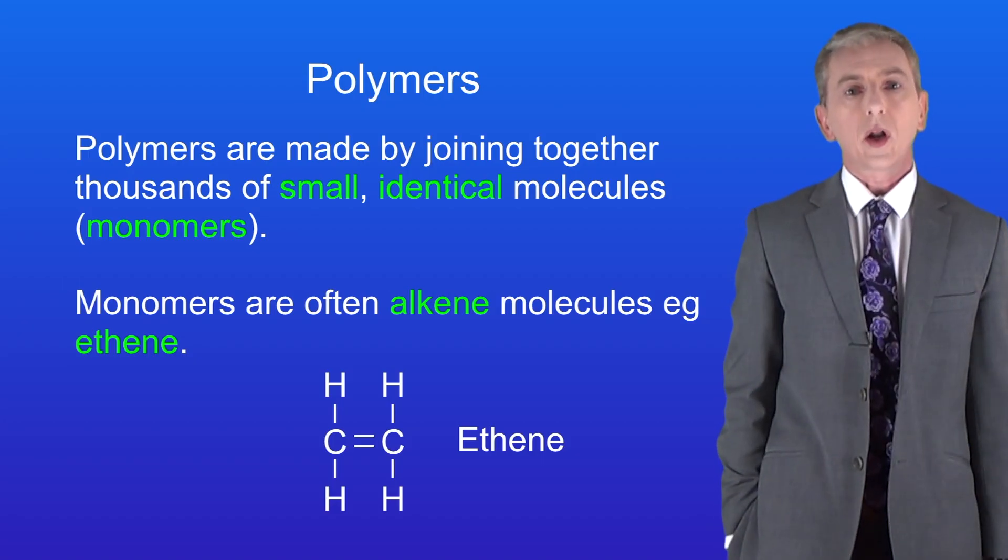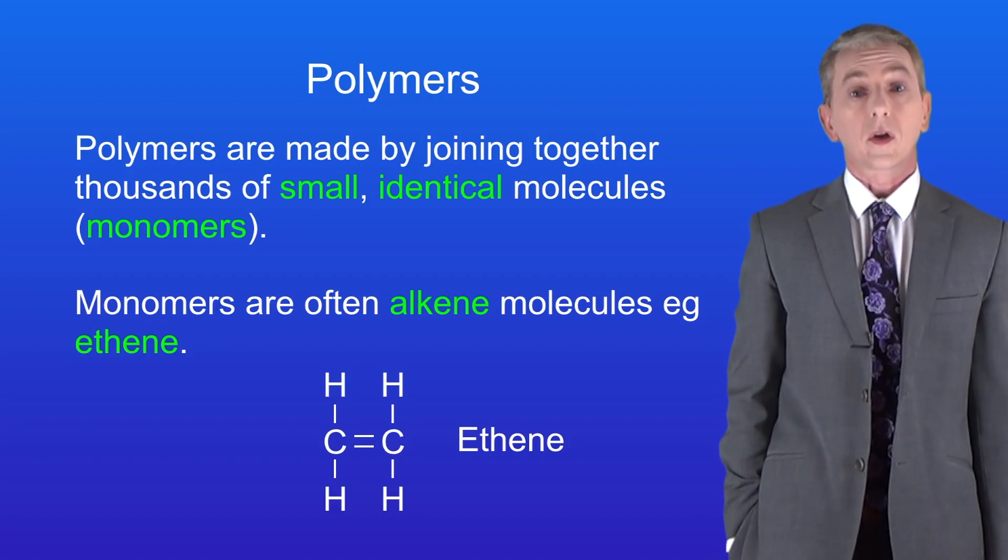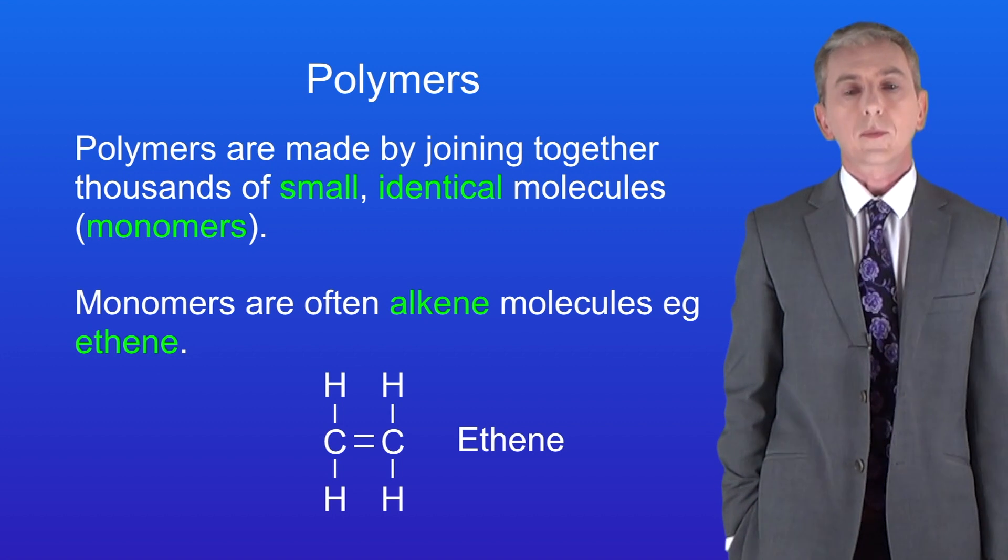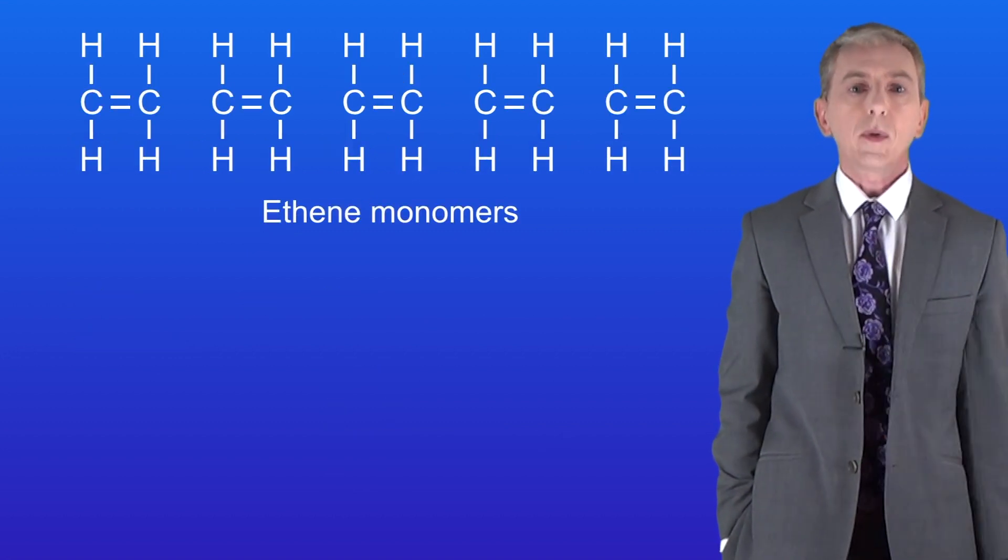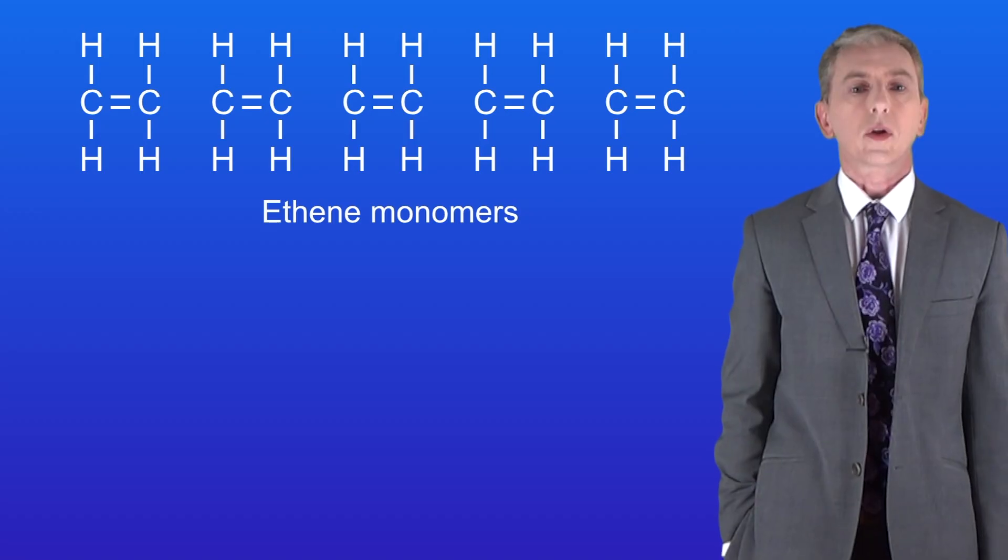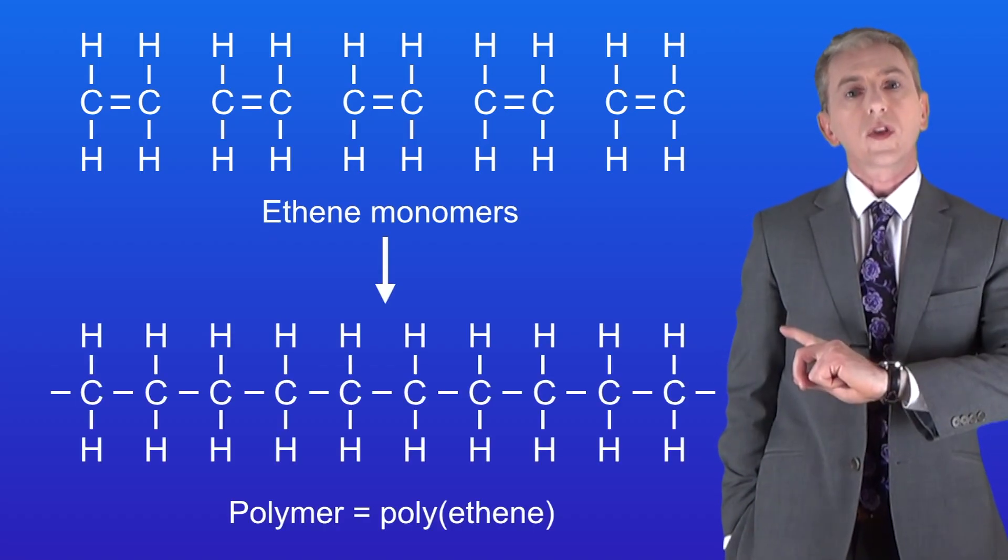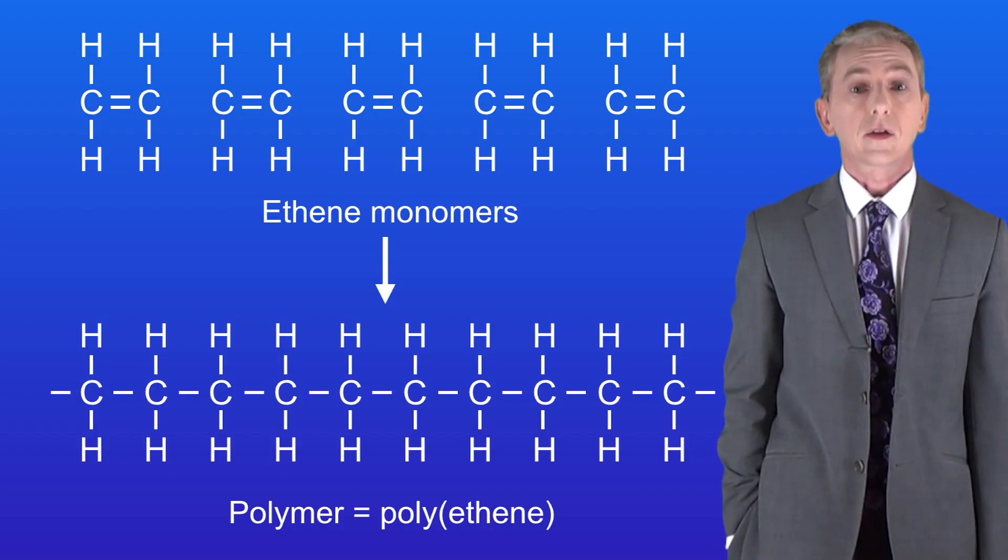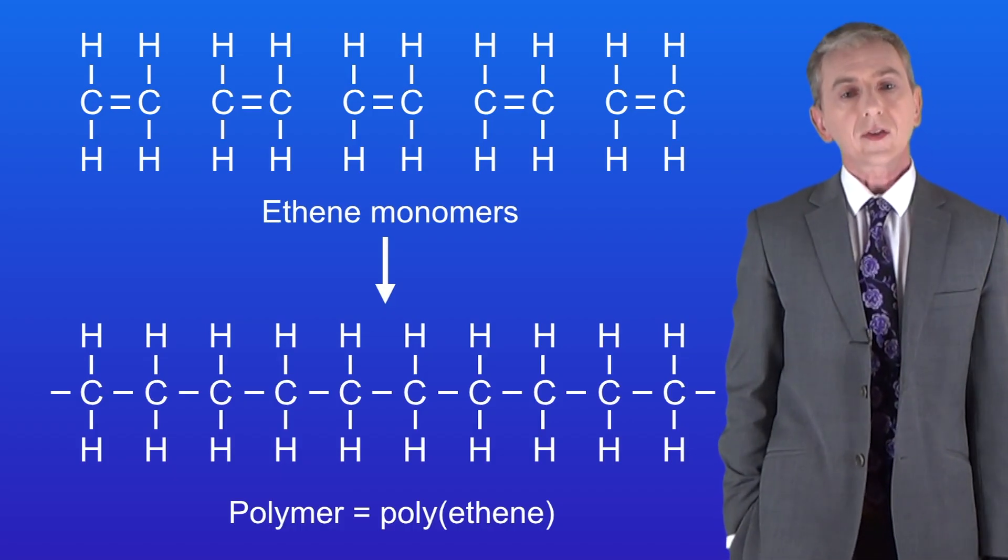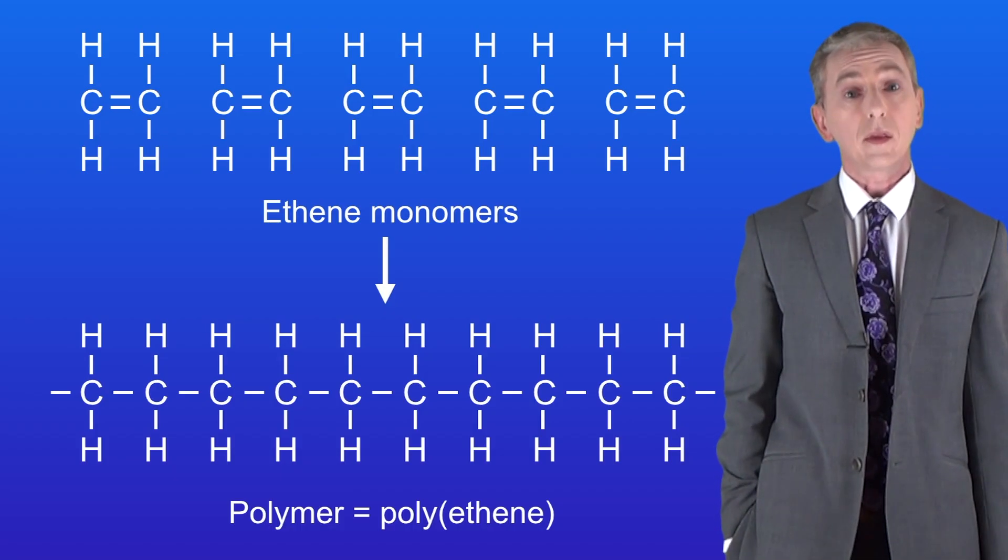When we form a polymer we join together thousands of monomer molecules so I'm showing this here for ethene. I'm only going to join together five ethene molecules but this gives you the idea. So this shows the ethene molecules joining together to form the polymer and in this case the polymer is called polyethene.